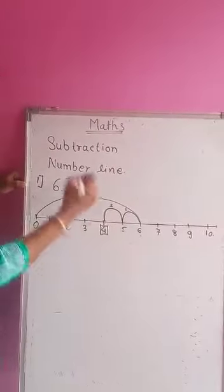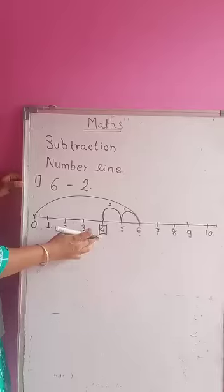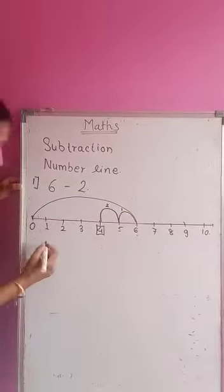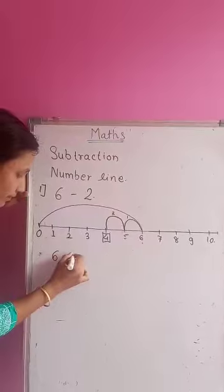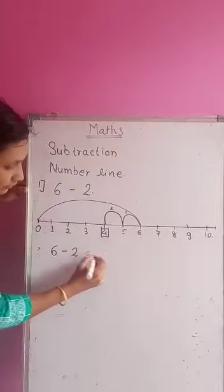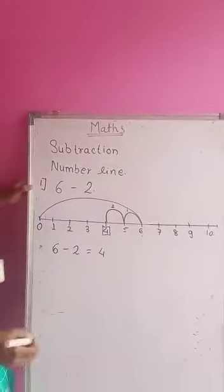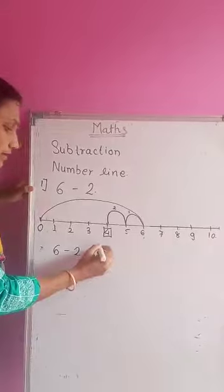Which number do we get here? 4. We get 4, and 4 is our answer. When we subtract 2 from 6, we get 4. So 4 is our answer.